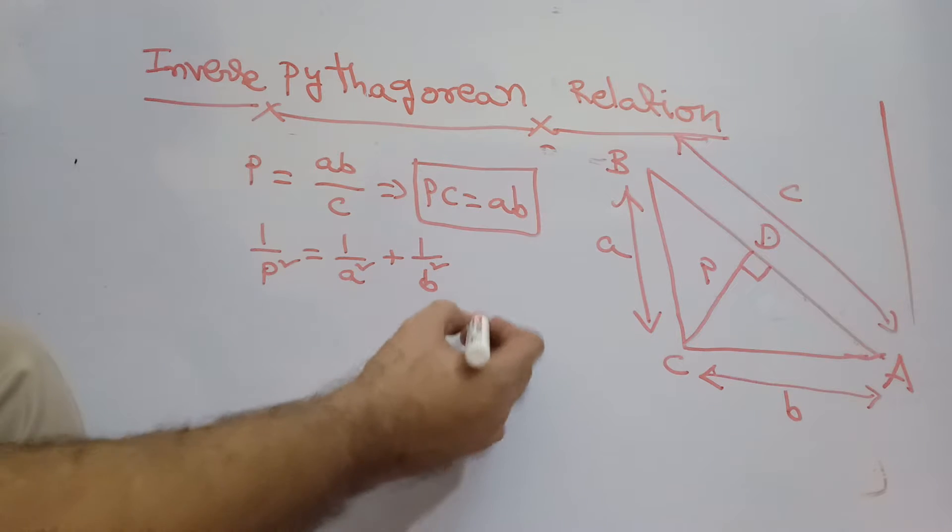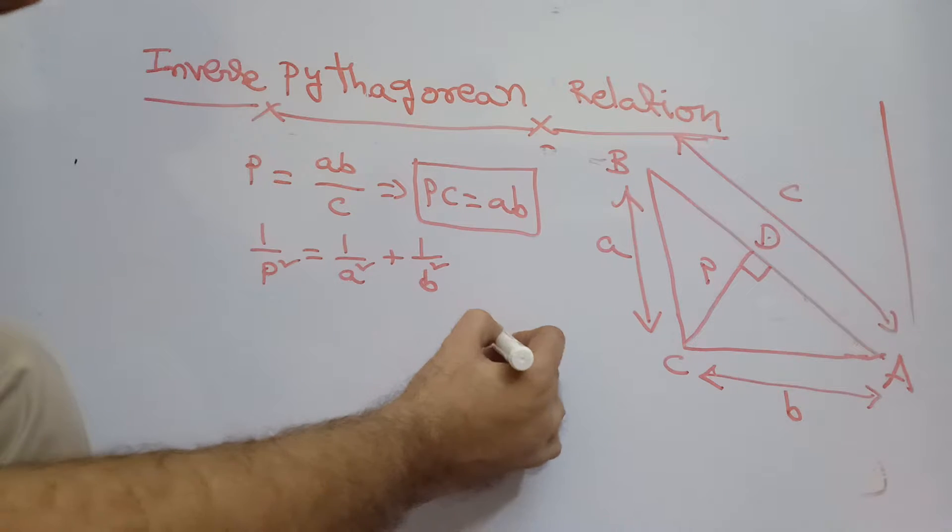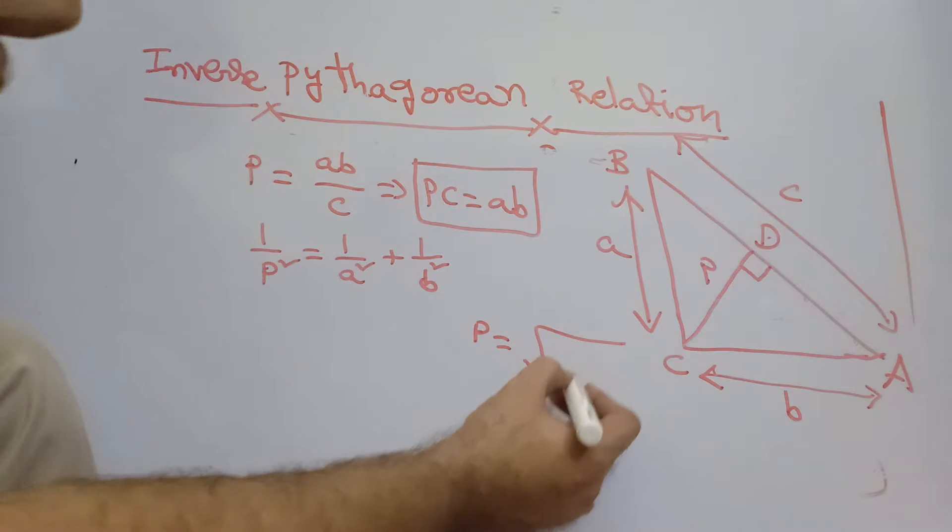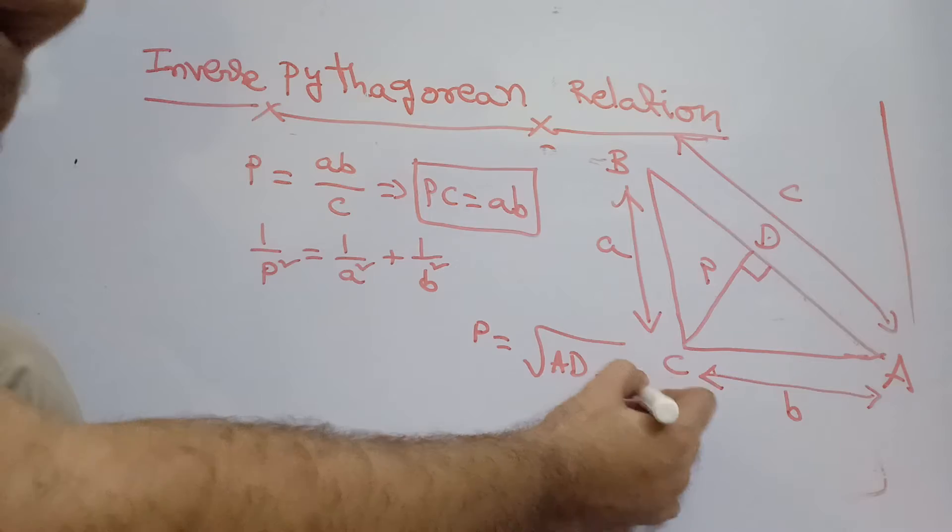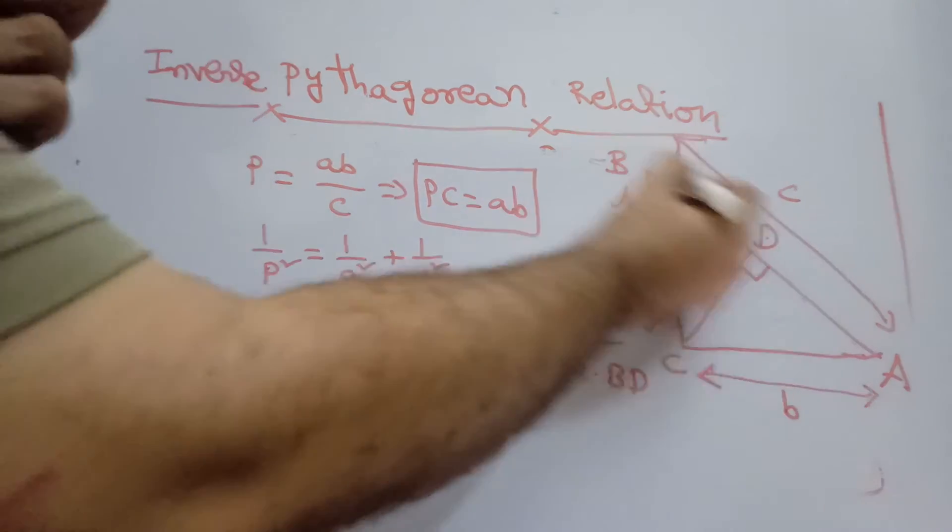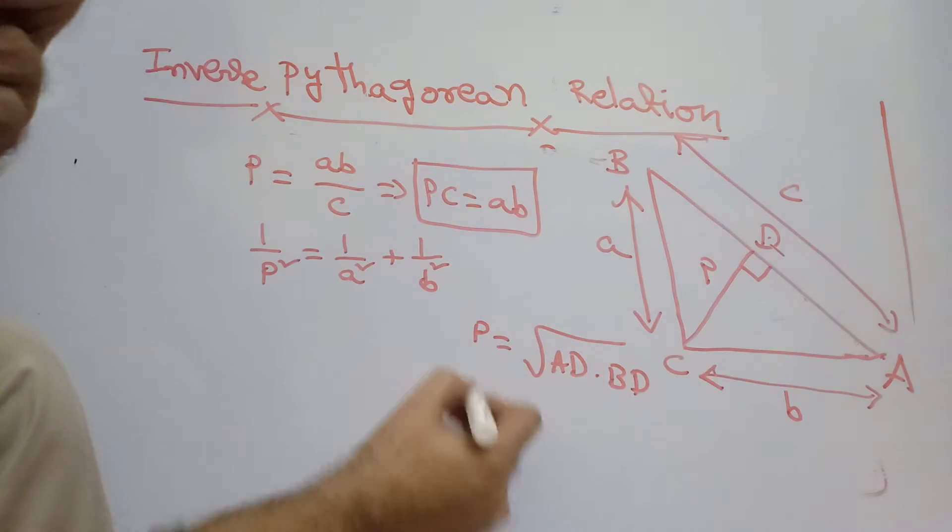The third one I can write is that the perpendicular P is of length that can be written as AD times BD. AD times BD square root gives me P.